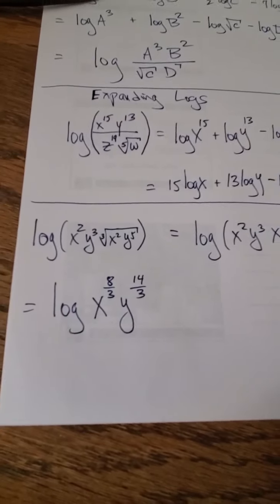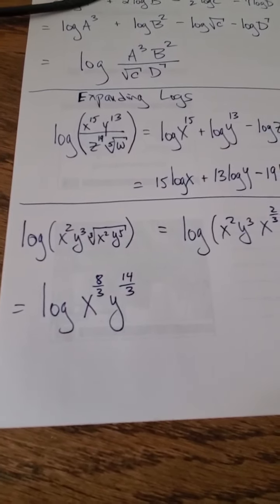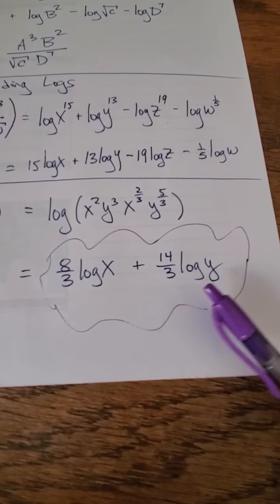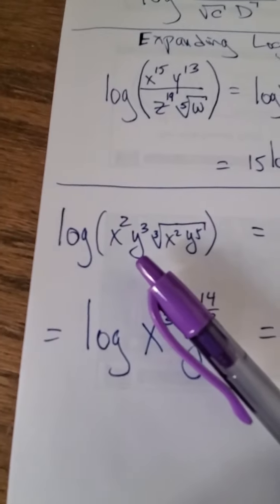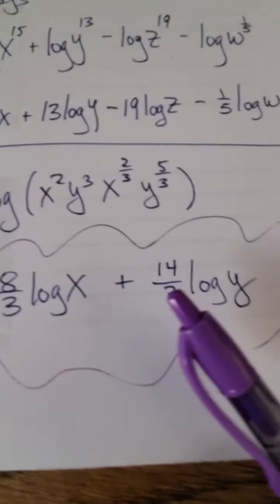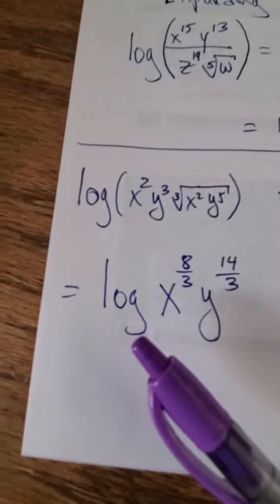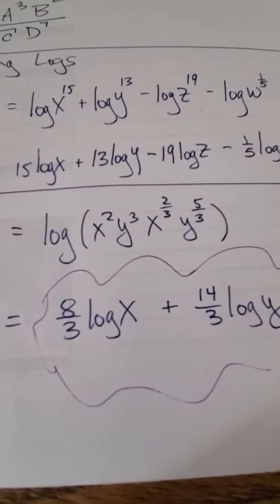And now I'm finally going to do the problem of expanding the logarithm, and I get my final answer, 8/3rds log x plus 14/3rds log y. And that is what this original problem is equal to. So this is equal to that through the magic of this step and that step and that step. Yay!